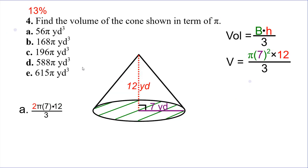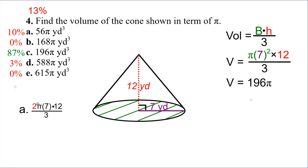Number four: find the volume of the cone. Only thirteen percent of you guys missed this, so you did really well. Our radius is seven, so seven squared is forty-nine. Forty-nine times twelve divided by three gives us a final answer of one hundred ninety-six pi. A common mistake for answer A — which ten percent got — is instead of finding the area of the base, you found the circumference. So instead of squaring the radius, you multiplied it by two, giving you fourteen pi times twelve divided by three, which would have given you fifty-six pi. Be careful: we're finding the area of the base, not its circumference.